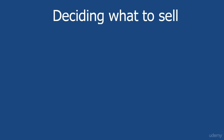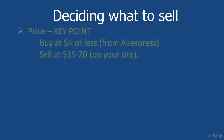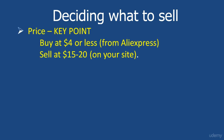The first key point is price. We're talking about buying something on AliExpress at four dollars or less and selling it at $15 to $20 — a significant markup. The reason for the $15–$20 range is that this is an impulse item. If you're buying something for a thousand dollars you'll spend time researching it, but around the $20 mark people will buy on impulse. Some people say $50 or $100 can also be an impulse item — go ahead and try it.